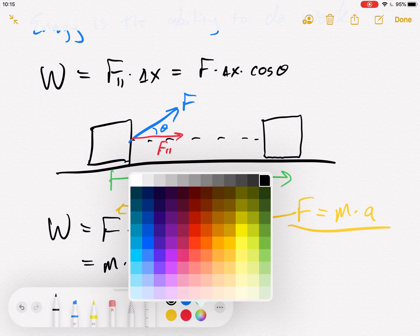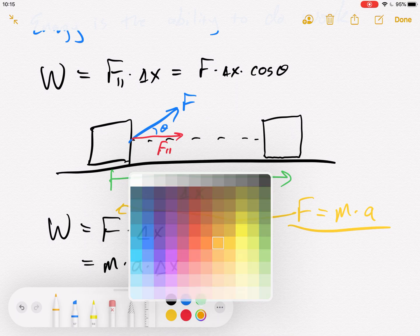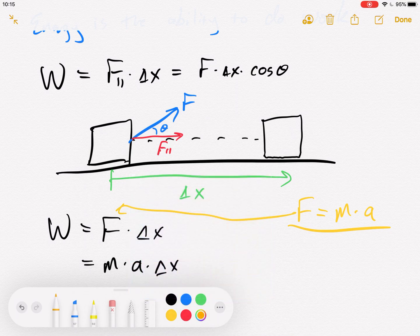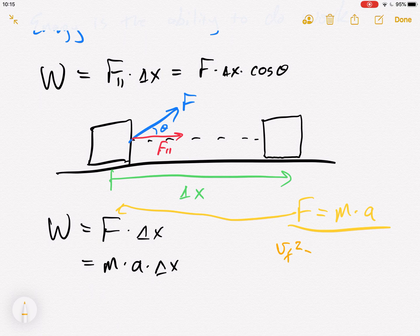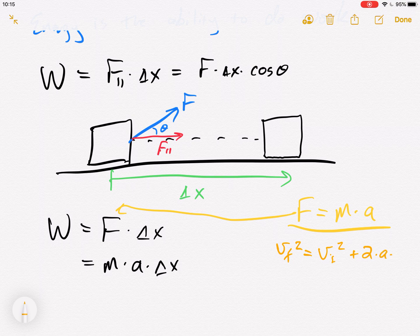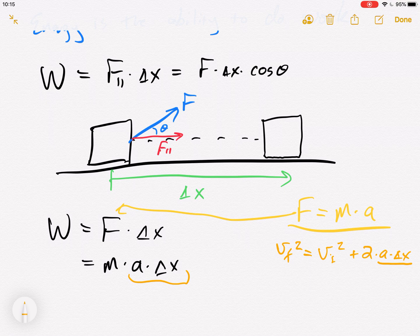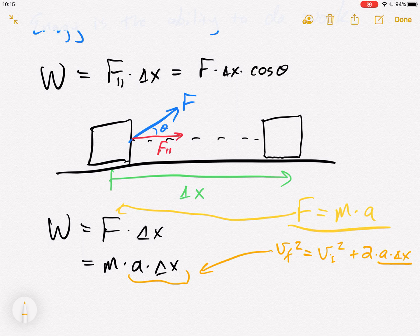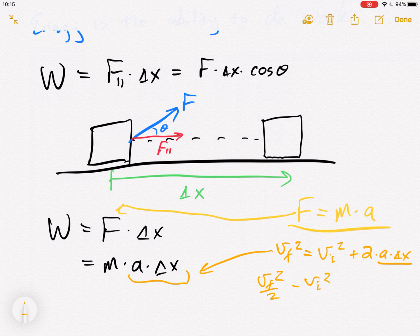But also I recall, let's use orange. Let's recall a kinematics equation. Do you remember v final squared equals v initial squared plus 2A delta x? I want to draw your attention to the A delta x. Now I have an A delta x. So what if I solved this kinematics equation for A delta x and plugged it in? If I solved this for that, I would have v final squared over 2 minus v initial squared over 2 equals A delta x.